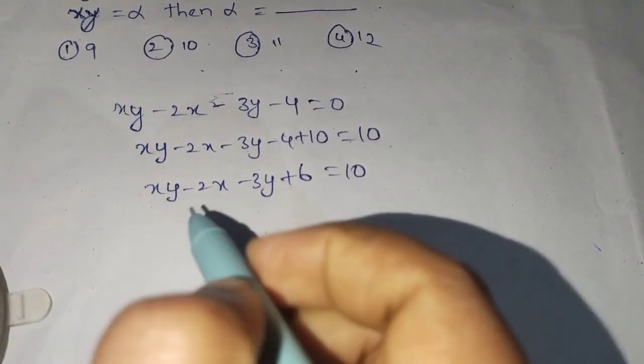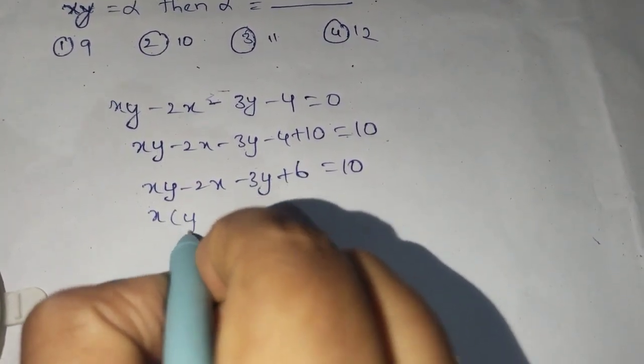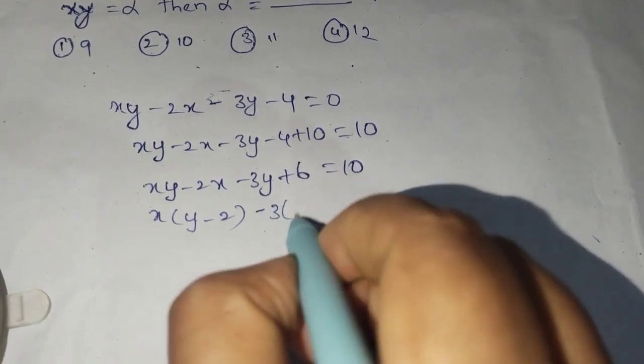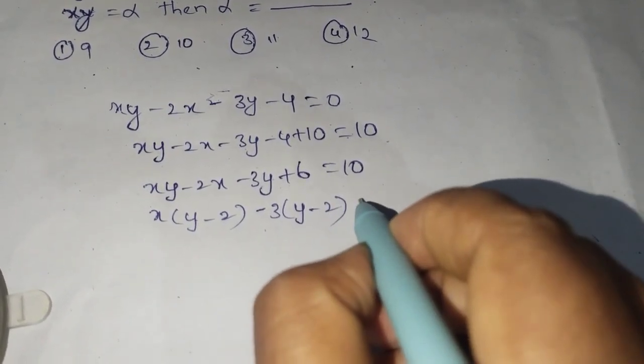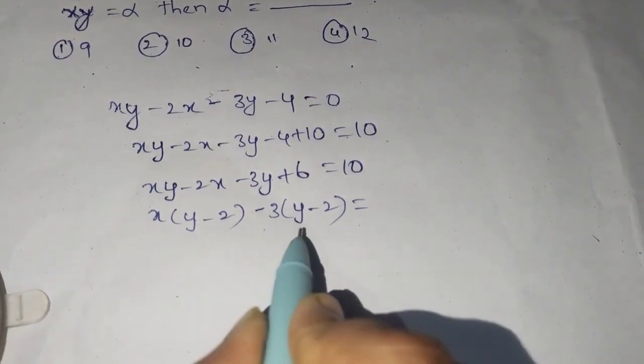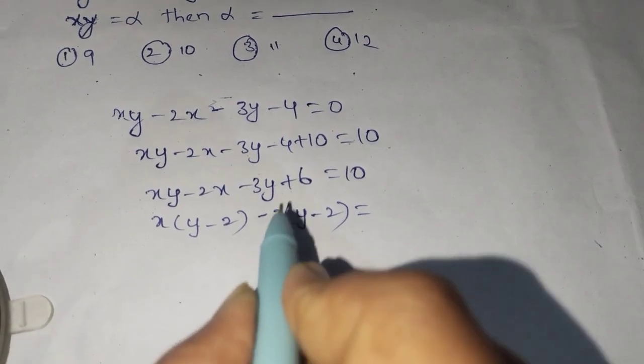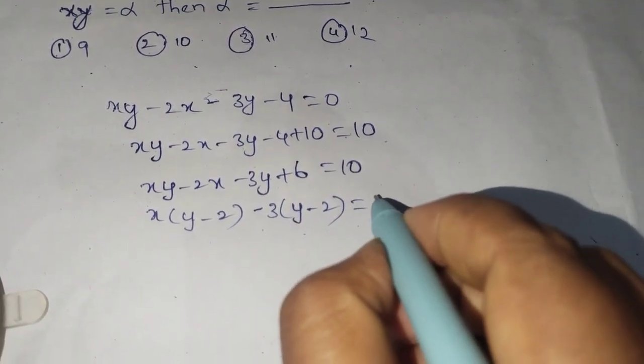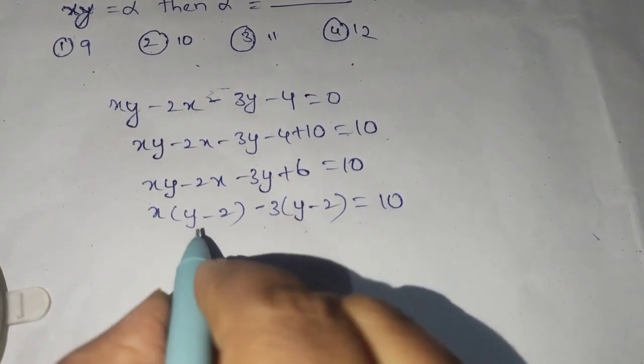I will take x common from y minus 2, here take minus 3 common, then again y minus 2. So to equate these two factors I added plus 10 on both sides, that is the reason. So now take y minus 2 common.